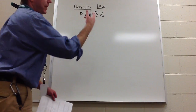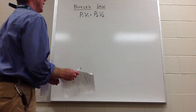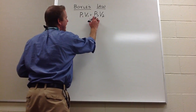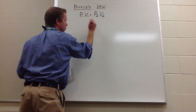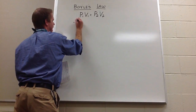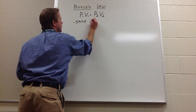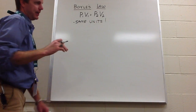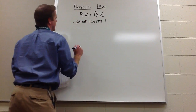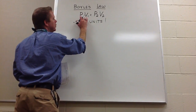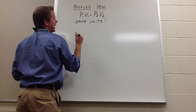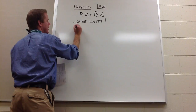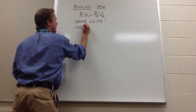If you want to think of it as P-initial, V-initial, P-final, V-final, go right ahead. The big thing is you have to do two things. Number one, your pressures have to be in the same units. And you also have to understand relationships, because since these two things multiplied equal two things multiplied, pressure and volume end up being indirectly proportional.